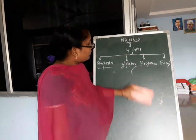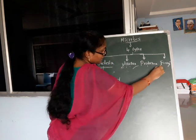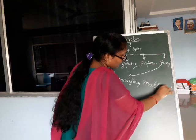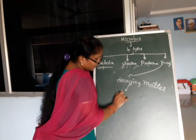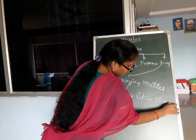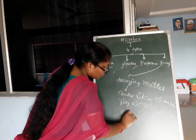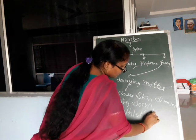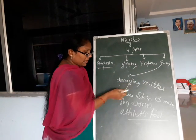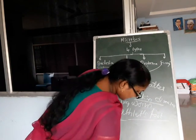Next, fungi. Fungi grow in decaying matter. Fungi cause skin diseases like ringworm and athlete's foot. These types of diseases are caused by fungi.